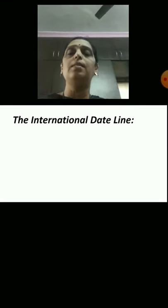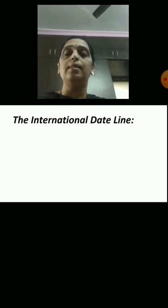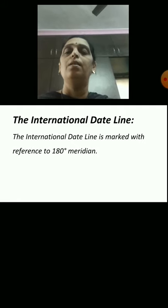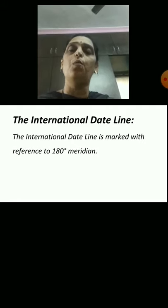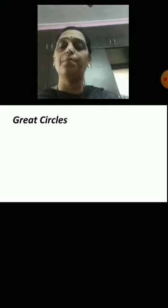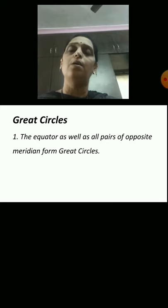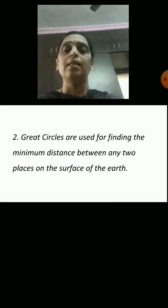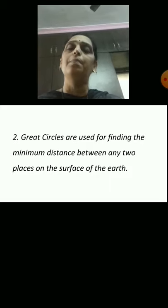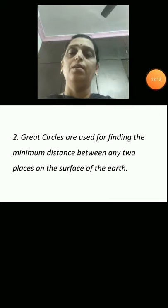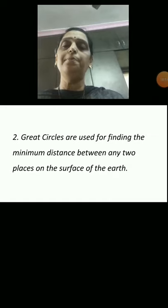The next point is the International Date Line, also called IDL. The International Date Line is marked with reference to the 180 degree meridian. Next, what are great circles? The equator as well as all pairs of opposite meridians form great circles. Great circles are used for finding the minimum distance between any two places on the surface of the earth.